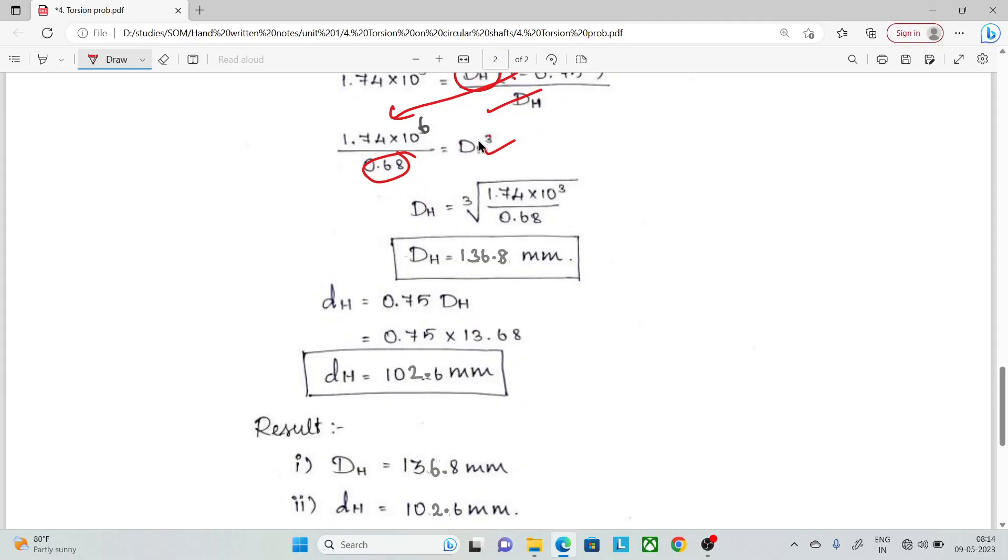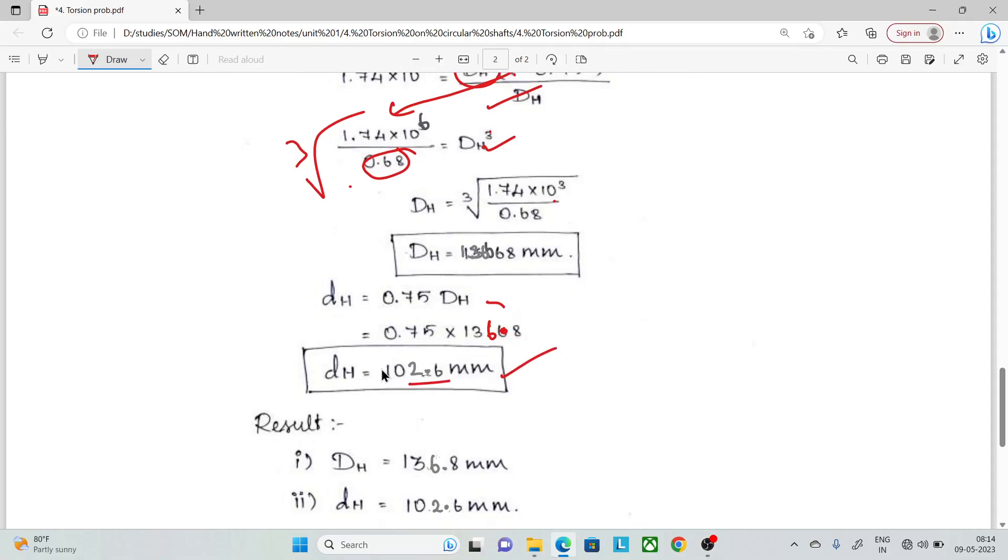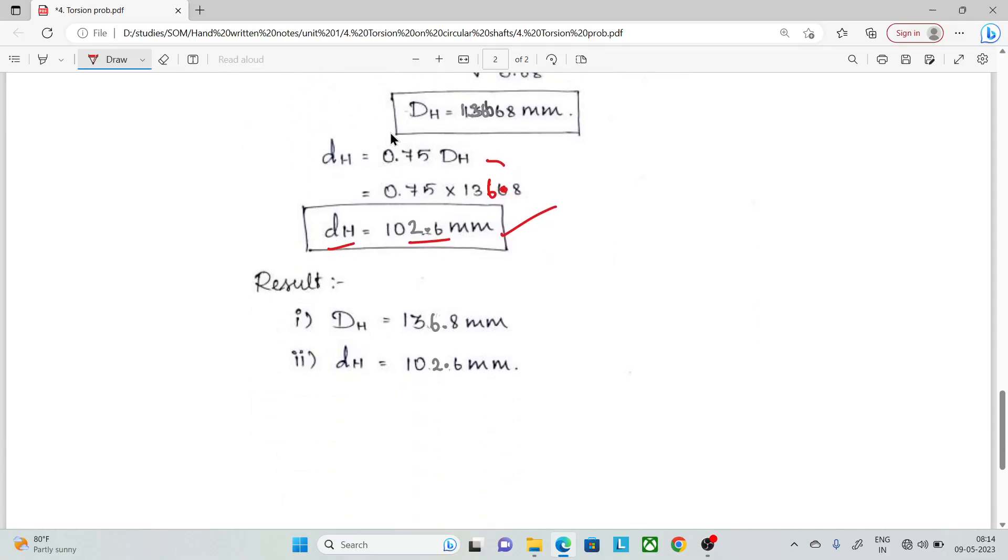We can solve for d_h cubed by canceling terms and dividing. Once we substitute and solve this equation, we obtain the internal and external diameters. Thank you.